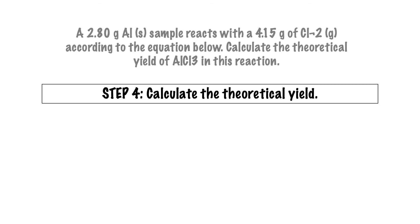In this case, the limiting reactant is chlorine, so the maximum amount of aluminum chloride that can be formed is calculated accordingly.